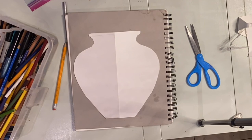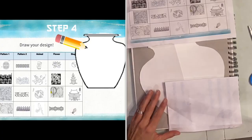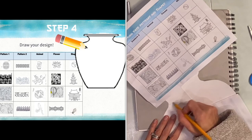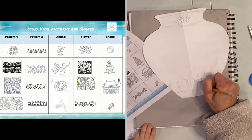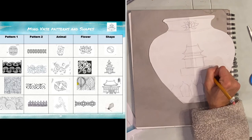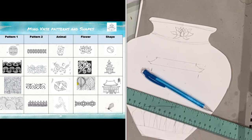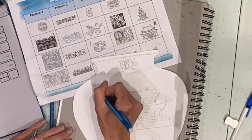Now for the fun part, it is time to draw your design. It's good to start with a reference photo of a vase that you really like, or you can use the handout that shows you different Chinese patterns and symbols. I decided to put a lotus at the top of my vase, and in the center I am drawing the Forbidden City Palace. You can also add animals like a dragon or a panda. Really anything that interests you, you can add to your vase design. Just make sure you draw it with pencil first.